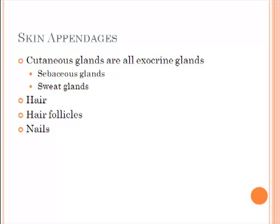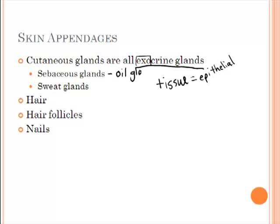Now let's get into the appendages of the skin. There are glands found in the skin called cutaneous glands. Notice that these are all exocrine glands — exo means to exit, so these are glands producing secretions that go outside of the body. Glands in general are made of epithelial tissue. So sebaceous glands, also known as oil glands, produce sebum, which is a fancy word for oil, and they are made of epithelial tissue.